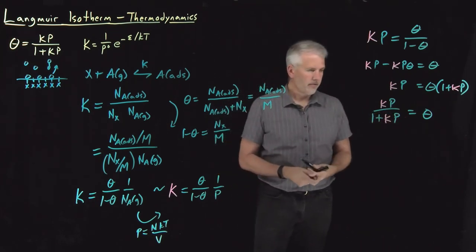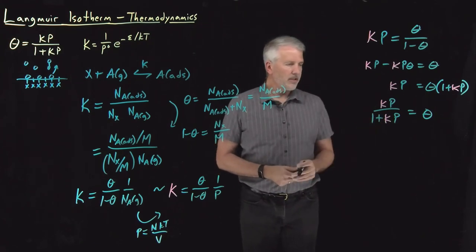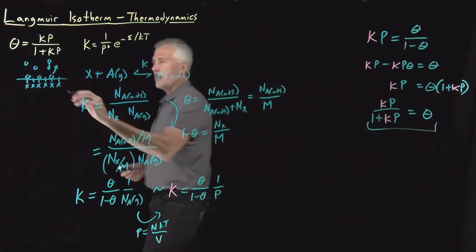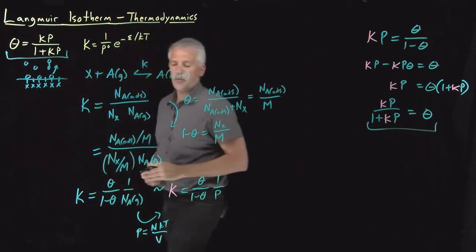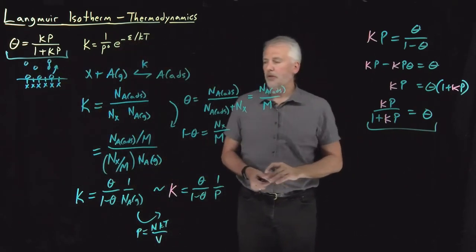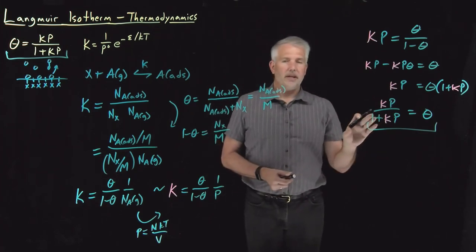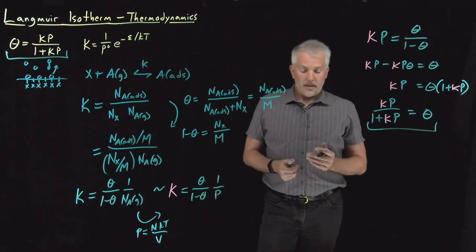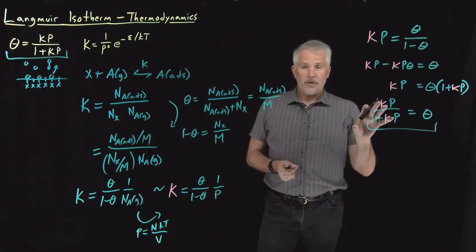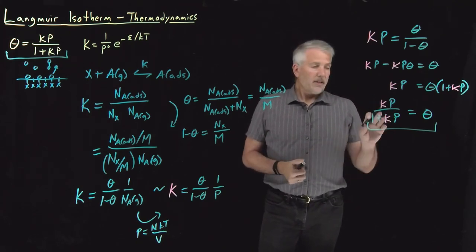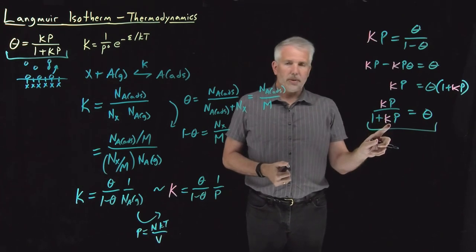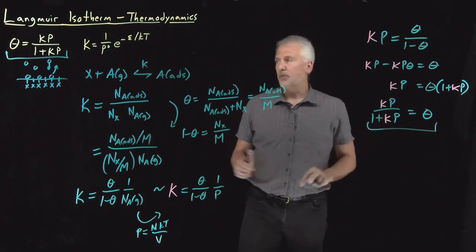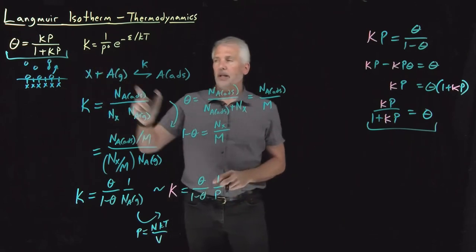All right. So if I've kept my color scheme straight, this equation that we've just obtained is exactly the same as this equation that we obtained, perhaps with a little less effort when we think about it from an equilibrium point of view than from the StatMech point of view that led to this result. The downside of doing it with thermodynamics is this K, this equilibrium constant that we've just determined, we don't know as much about this value of K as we did about this value of K. In principle,